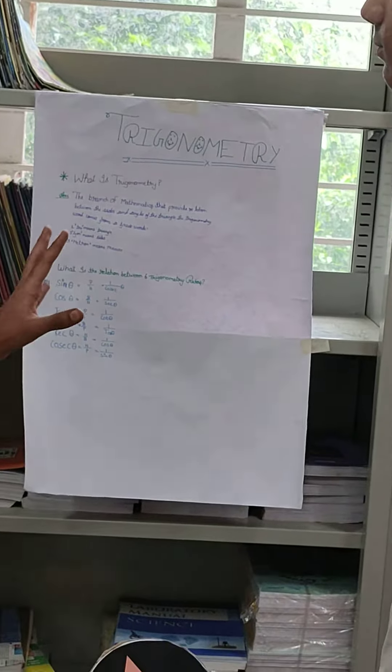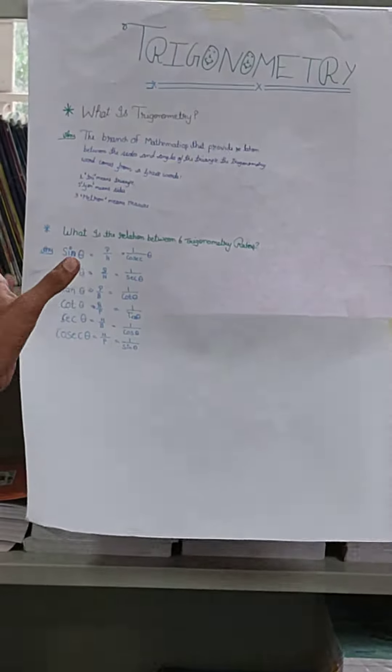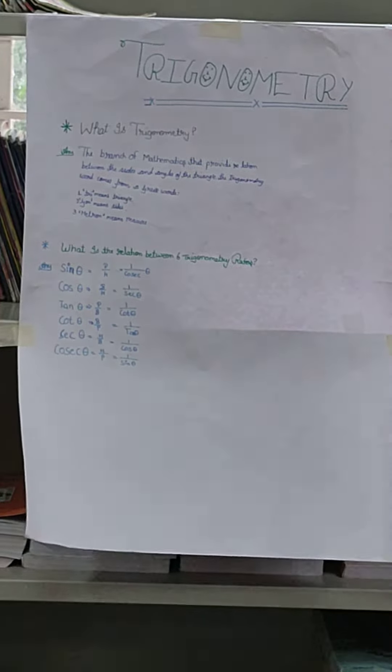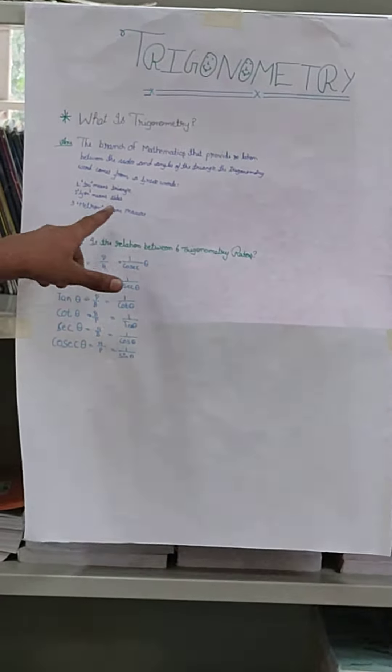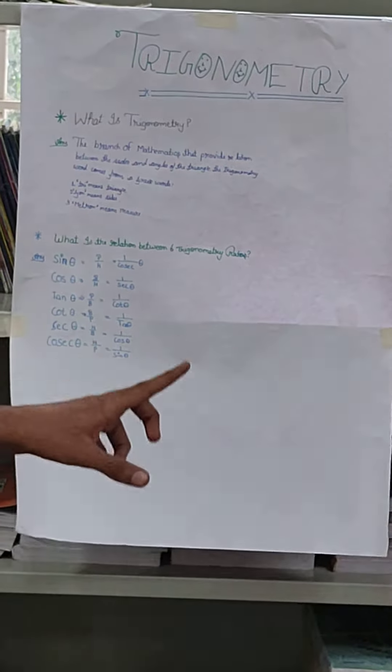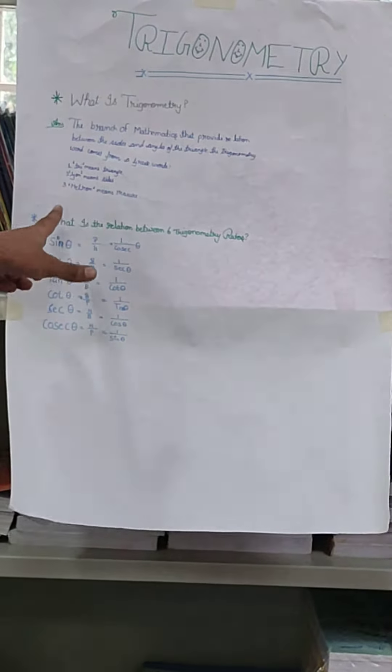Now I am going to explain. This is a diagram of the triangle based on the three Greek words. And these are the six ratios.